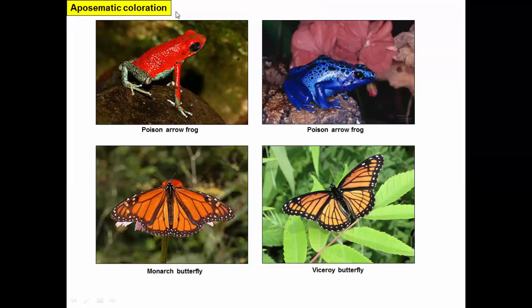Aposematic coloration is fairly common in nature. Poison arrow frogs are poisonous — if you eat them, they'll kill you or cause damage, as opposed to venomous, which involves biting with fangs. These frogs have bright coloration that warns predators they are poisonous. You may have heard of monarch butterflies and viceroy butterflies. Monarchs eat milkweed when they're caterpillars and end up tasting really horrible. Viceroy butterflies look like monarchs despite the fact that they don't taste horrible. These monarchs taste really bad and have bright coloration to signal that to predators. The viceroys don't taste bad but have a color pattern that copies the monarchs, so predators won't eat them either.